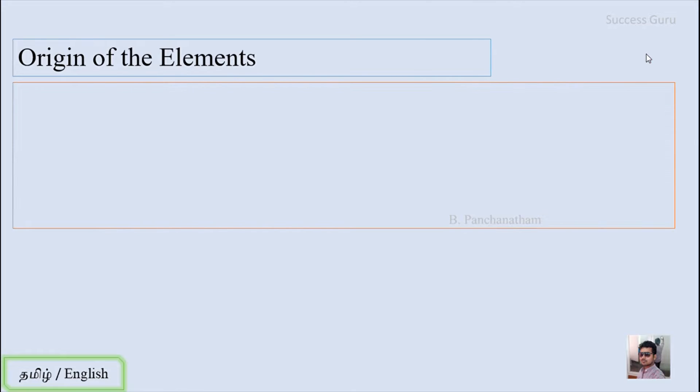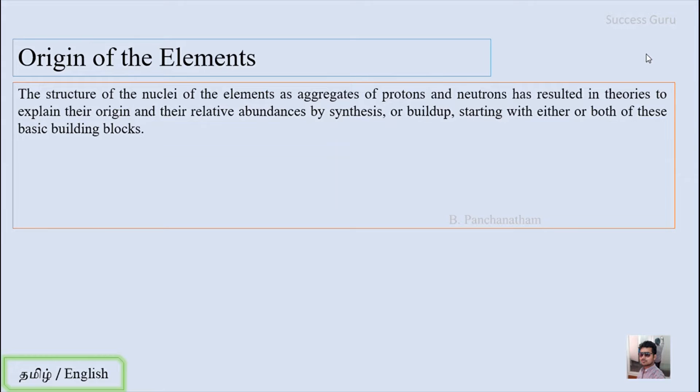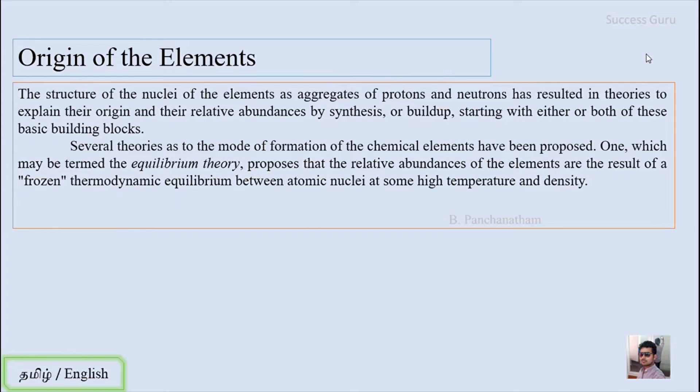The structure of the nuclei of elements as aggregates of protons and neutrons has resulted in theories to explain their origin and relative abundance by synthesis, starting with either or both of these basic building blocks. Several theories as to the mode of formation of chemical elements have been proposed. One, termed the equilibrium theory, proposes that the relative abundances of elements are the result of frozen thermodynamic equilibrium between atomic nuclei at some higher temperature and density. This is acceptable up to atomic number 40.